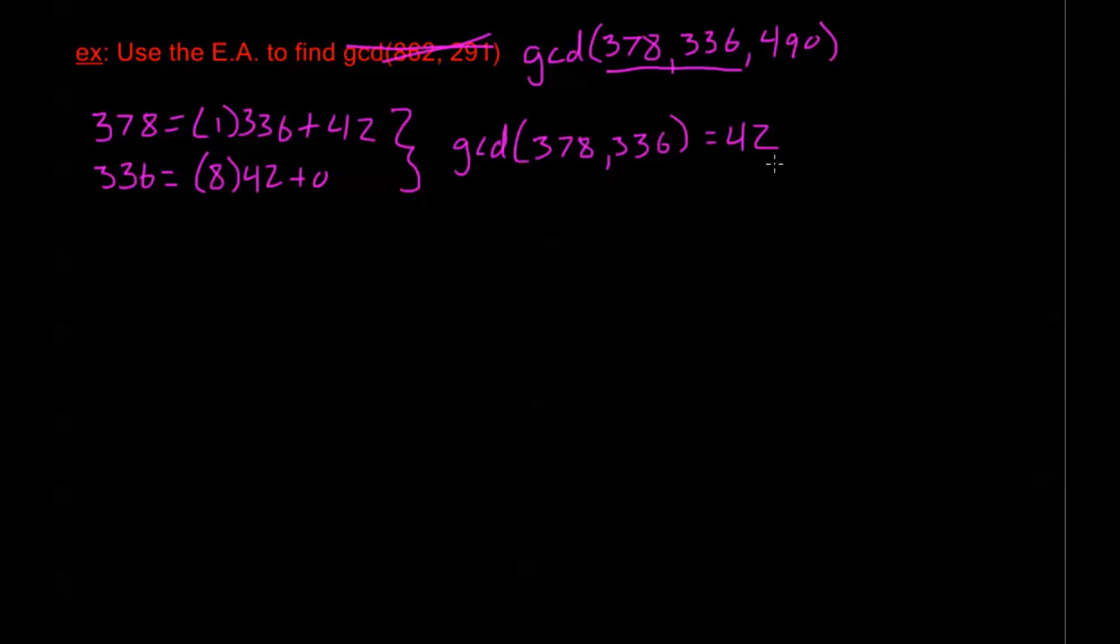Now, why did I do this with two numbers? First of all, because the Euclidean algorithm only works with two numbers. But, second of all, now, to find the GCD of 378, 336, and 490, it's going to be enough to find the GCD of 490 and 42. 42 is the largest number that divides both 378 and 336. So, if there's some number that divides all three of these numbers, it must also be a divisor of 42.